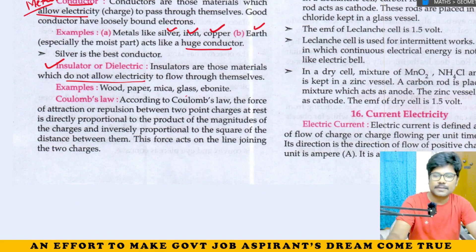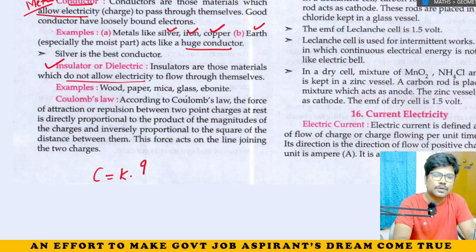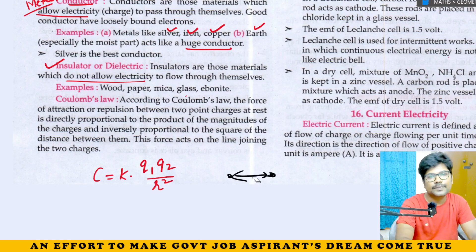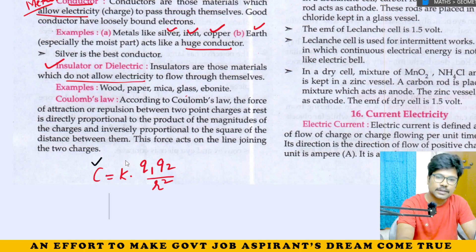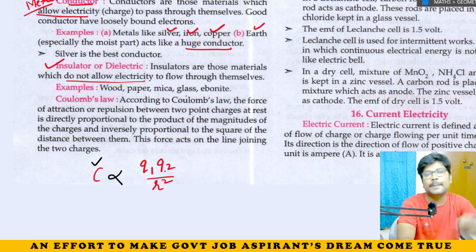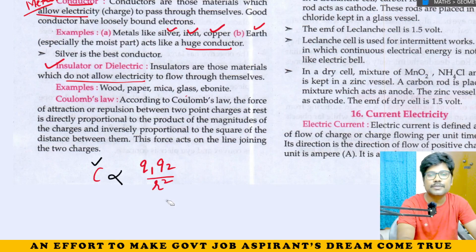Coulomb's law: F equals K into Q1 Q2 divided by R squared. According to Coulomb's law, the force of attraction or repulsion between two charges is directly proportional to the product of the two charges and inversely proportional to the square of the distance between those charges. That's it.